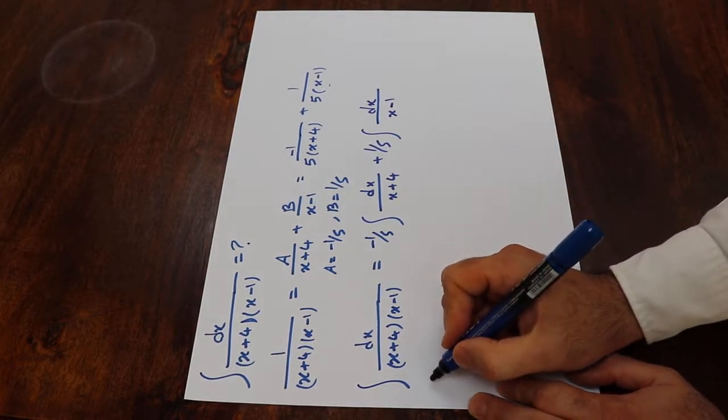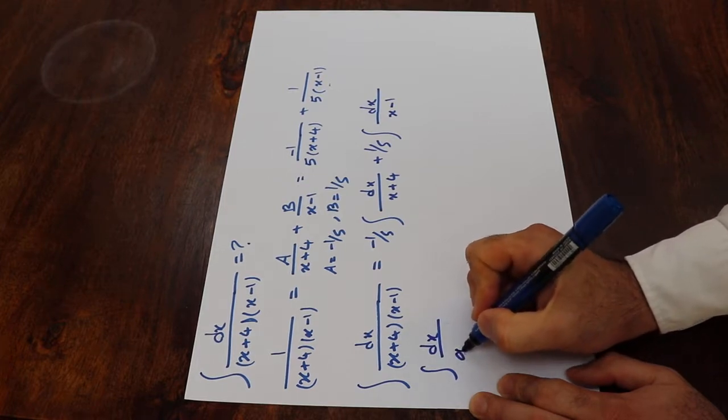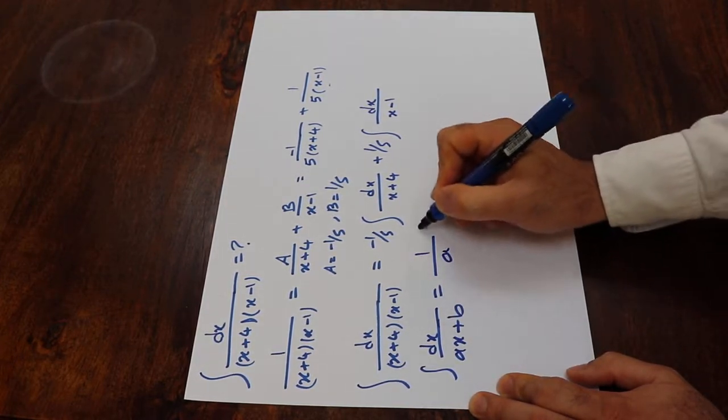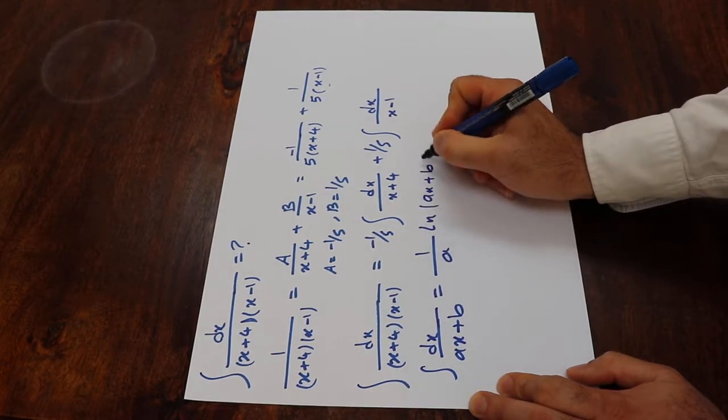And from table of integrals, we know that the integral of dx divided by ax plus b will be equal to 1 divided by a ln ax plus b.